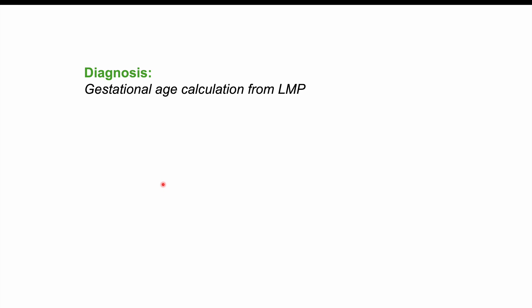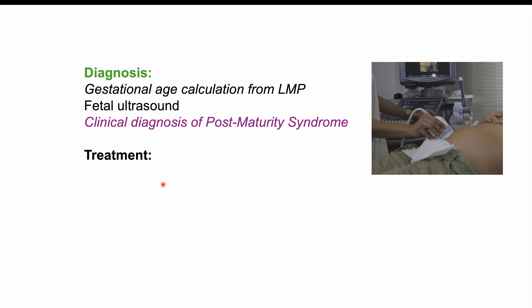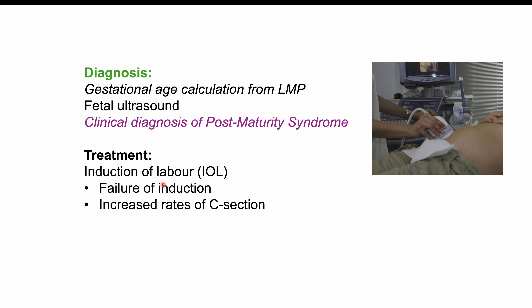For diagnosis, clinicians should perform proper gestational age calculations — especially from the last menstrual period — and fetal ultrasound can also help with dating. Post-maturity syndrome is often a clinical diagnosis based on the features described. Treatment centers on induction of labor at the right gestational age, as we don't want to go beyond 39 to 40 weeks given the increased stillbirth risk. However, there can be failure of induction, and even successful induction carries increased rates of C-section and maternal complications including perineal tearing and shoulder dystocia.